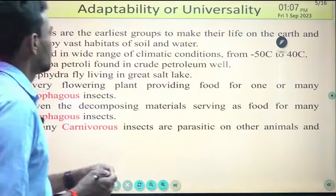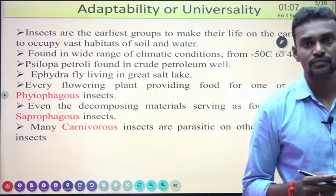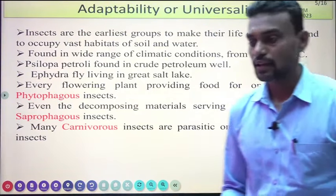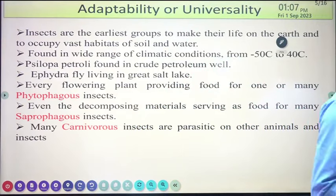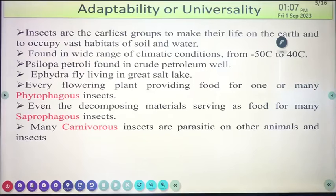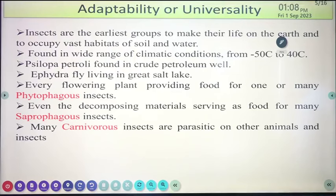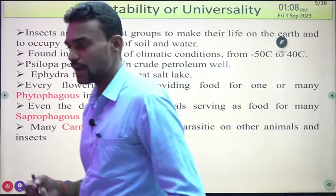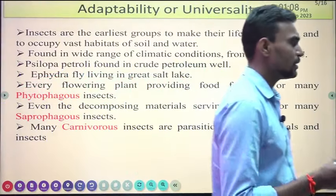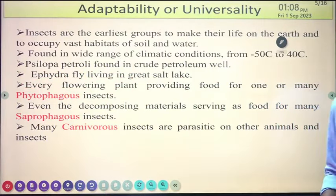The next point is adaptability. Insects can adapt to various environments and are among the earliest groups to establish life on Earth. They are found across a wide range of climatic conditions. Every flowering plant provides food for one or many species of phytophagous insects. Their capacity for adaptation to various environments is why they are also dominated in nature.